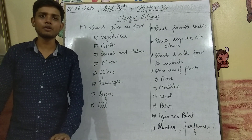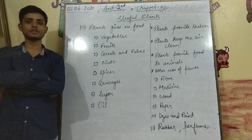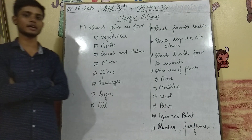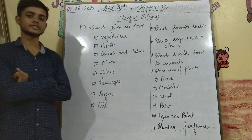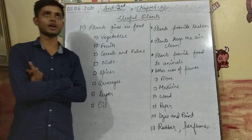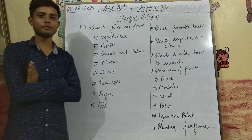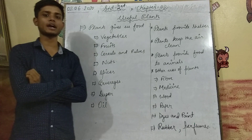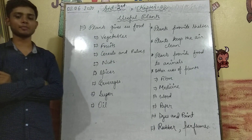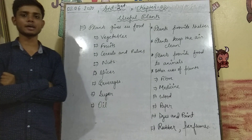Plants provide food from all their parts — like roots, stem, flower, and fruit — all of these we use in our food. Like roots: carrot and radish are used in our food.